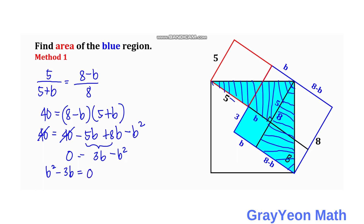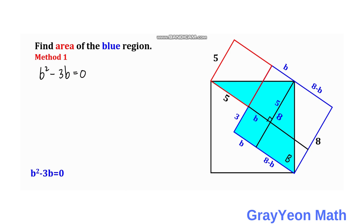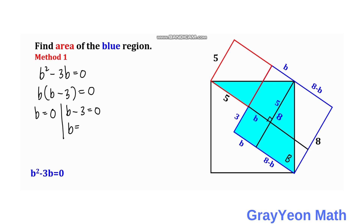If we multiply by negative 1, we have b squared minus 3b equals 0. Next, we solve this resulting quadratic equation. This is an easy one — we can solve it by factoring. We factor out b: b times (b minus 3) equals 0. So we have b equals 0 and b equals 3. b equals 0 would be invalid because there is no zero distance, so we consider only b equals 3.